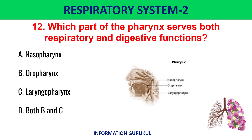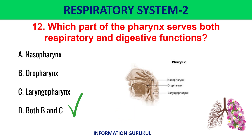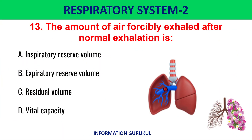Which part of the pharynx serves both respiratory and digestive functions? Both B and C. The amount of air forcibly exhaled after normal exhalation is expiratory reserve volume.